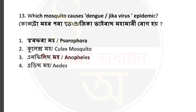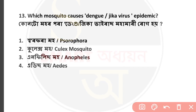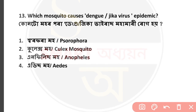Question number 13: Which mosquito causes dengue and Zika virus epidemic? We already discussed malaria earlier — malaria is caused by the Anopheles mosquito. Dengue and Zika virus epidemics are spread by the Aedes mosquito. Option number 4 is correct.